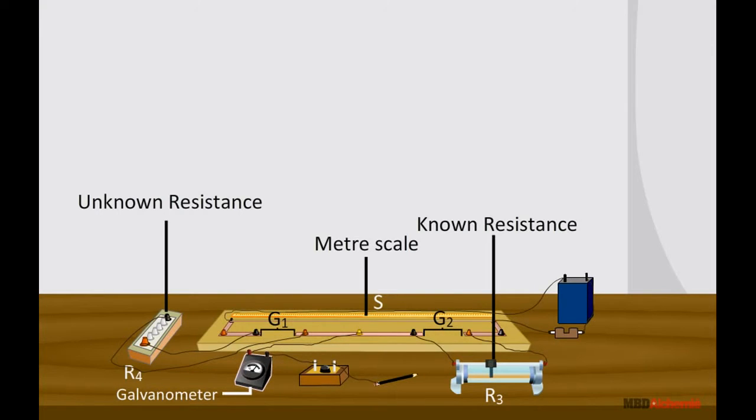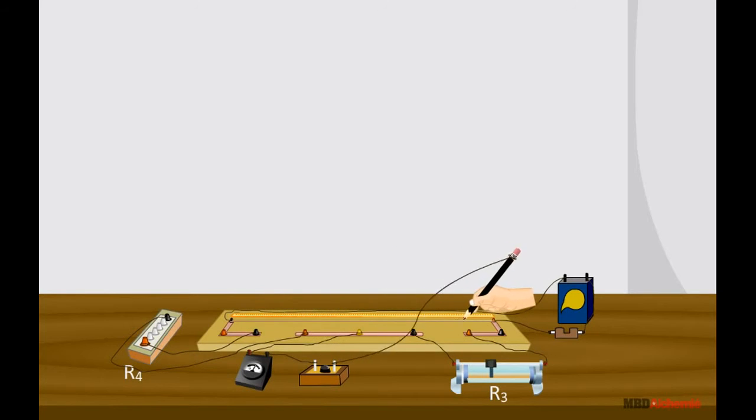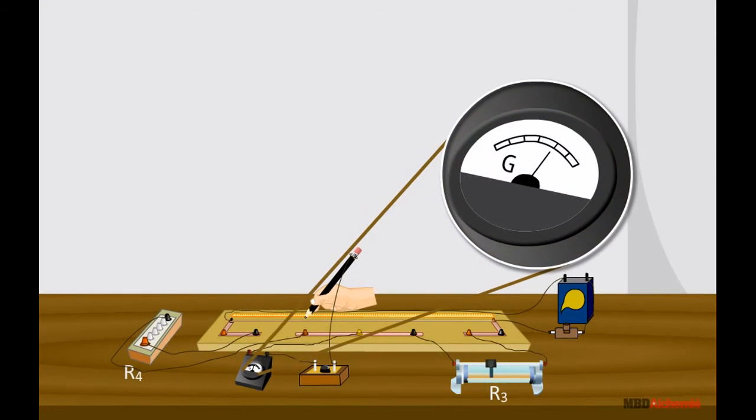The other terminal of the galvanometer is connected to a jockey which is made to slide on the meter bridge wire. By moving the jockey along the wire, we look for a point which corresponds to a null point where the galvanometer shows no deflection and the bridge is balanced.